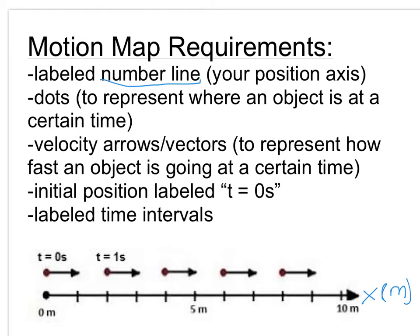Next, we want to talk about dots. A dot just represents where an object is at a certain time. So on the motion map below, we can tell that at zero seconds, at the initial time, our object is at a position of zero meters. And we can also tell that at one second...